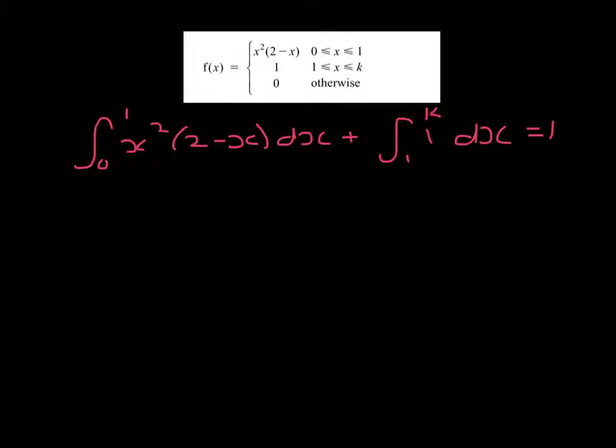This means that if we integrate from 0 to 1, x squared upon 2 minus x dx, and add to that the integral from 1 to k of 1 with respect to x, they must add to give 1.